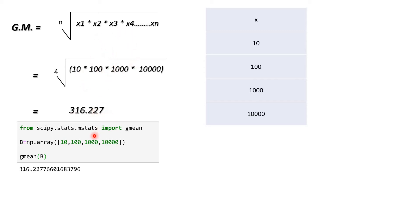You can see this output from the Jupyter Notebook. The simple package we need to import to calculate the geometric mean (gmean) is from scipy. I used the same array — same data points — and calculated the geometric mean, and got the same result as the manual formula calculation.